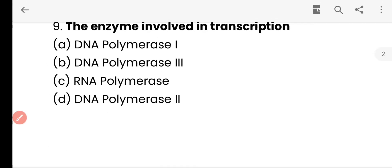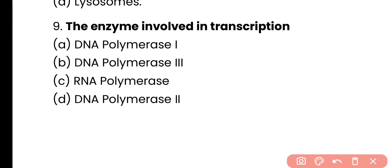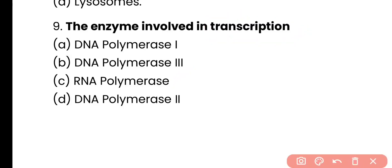Question number 9. The enzyme involved in transcription is DNA polymerase 1, DNA polymerase 3, RNA polymerase, or DNA polymerase 2? Correct answer is option C. RNA polymerase is the main enzyme in transcription.